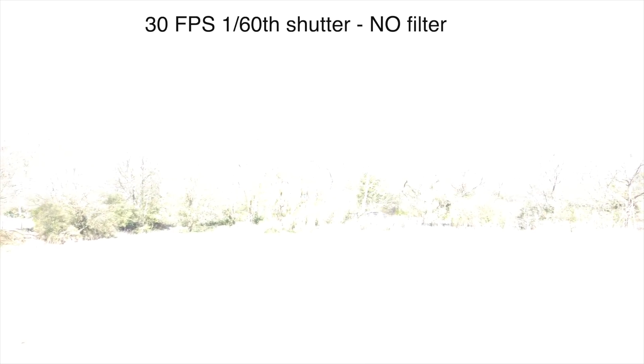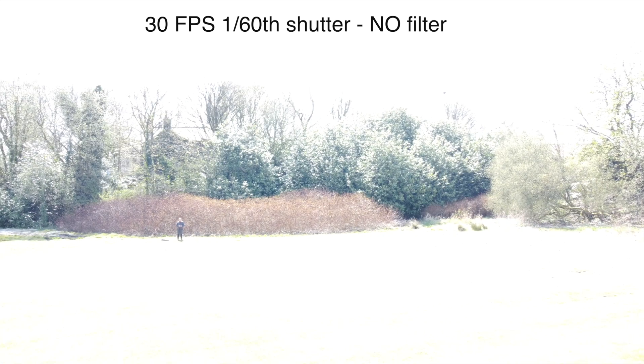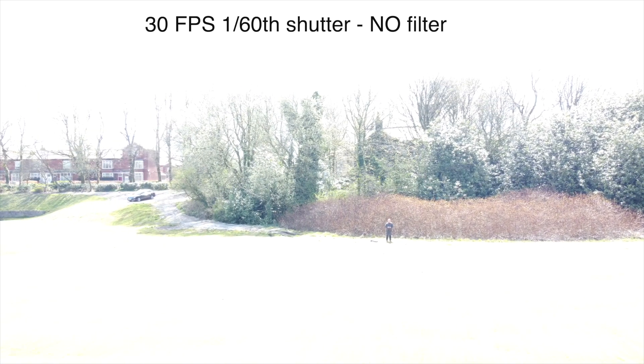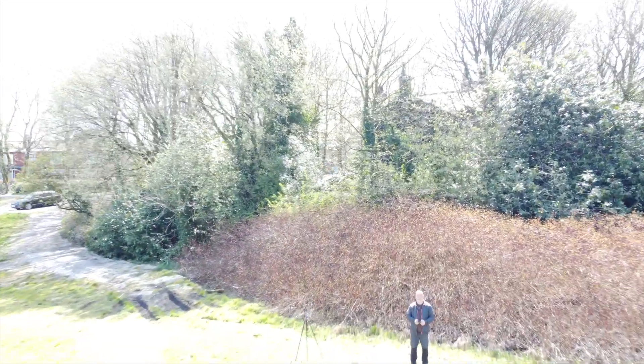So we'll take the camera out of auto and into manual. We've already said we're going to use 1/60th of a second for the shutter speed, shooting at 30 frames per second. This is what it looks like without any filters — as you can see, it's massively overexposed. You can't see a thing, so that's no use to anyone.